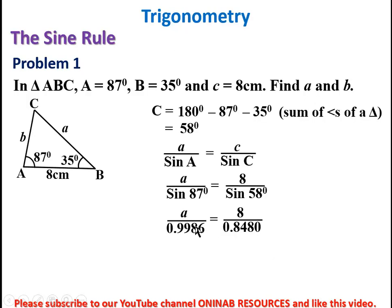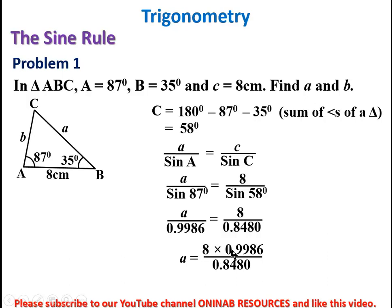Multiplying both sides by 0.9986, we get a = 8 × 0.9986 ÷ 0.8480. Inputting into the calculator: 8 × 0.9986 ÷ 0.8480 gives us 9.421 centimeters. That is side a.